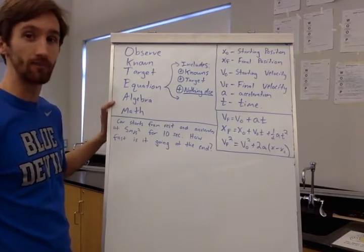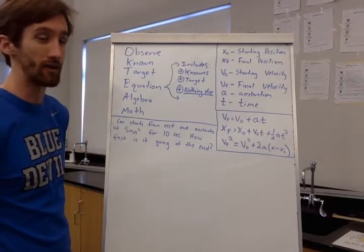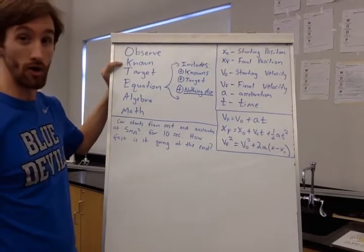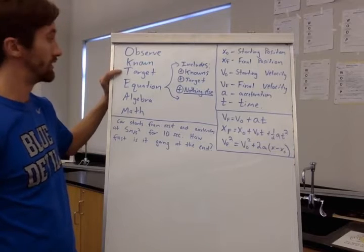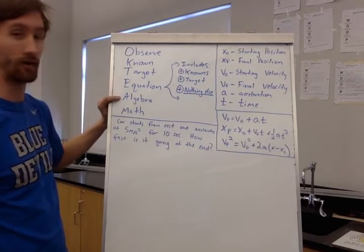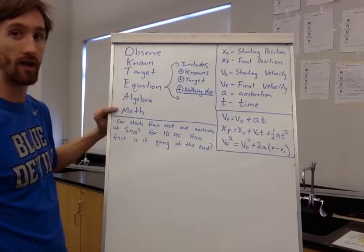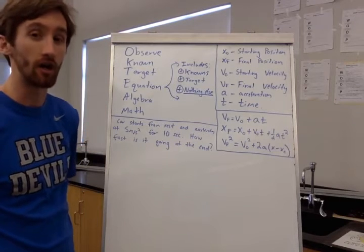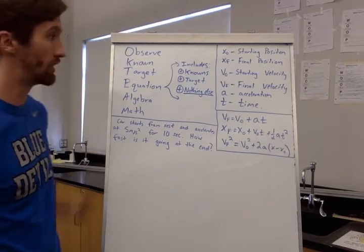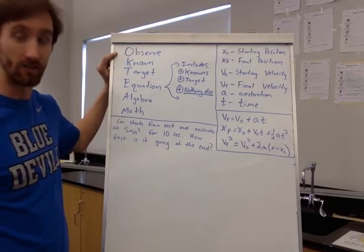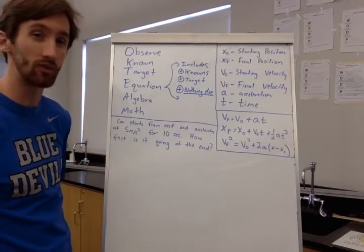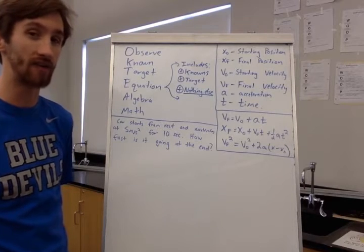OK TEAM is an acronym. It stands for Observe, Known, Target, Equation, Algebra, and Math. Those are our steps when we are solving these problems. When we observe, that's just reading the problem, making sure we understand what's being asked and what's happening.